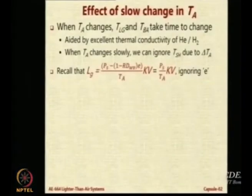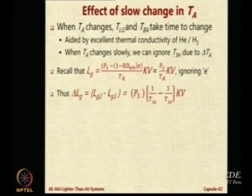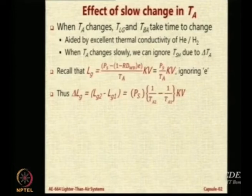We recall that the net lift is basically given by this expression which we have seen many times. If I put E equal to 0, it becomes PS by TA into KV. Therefore, the gross lift change will be just because of TA2 and TA1 — it will be (1/TA2 − 1/TA1) into KV, with PS taken out as common.